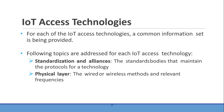In standardization and alliance, we discuss the standard bodies that maintain the protocols for access technology. Then we discuss the physical layer, which may be wired or wireless, and the relevant frequencies supported. We look into the MAC layer, the topology supported, the security aspect, and the competitive technologies that are similar and most suitable alternatives for the selected access technology.